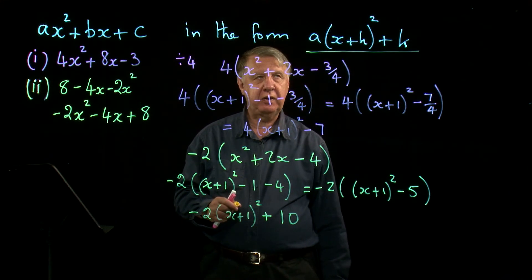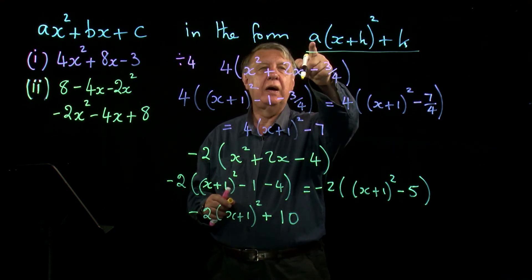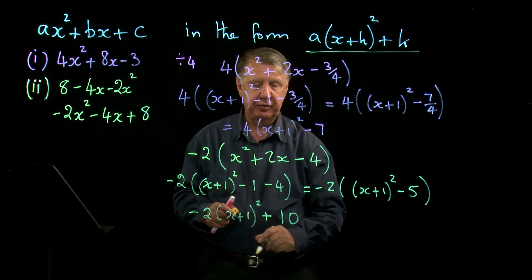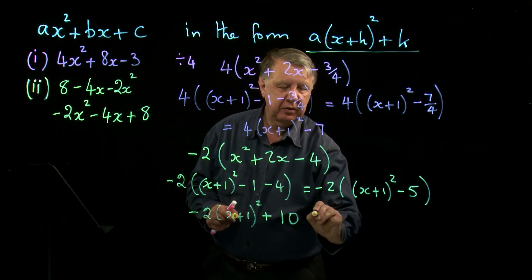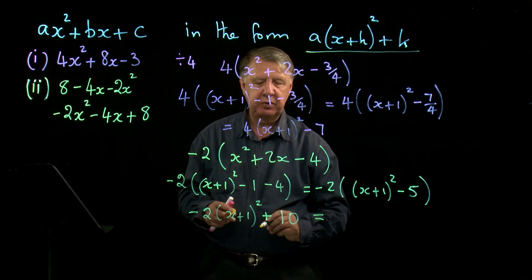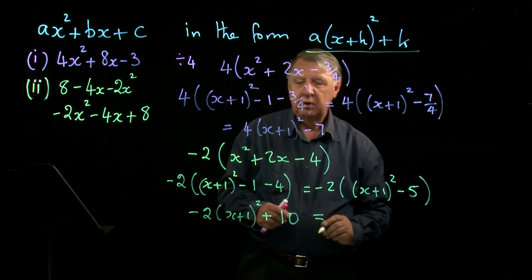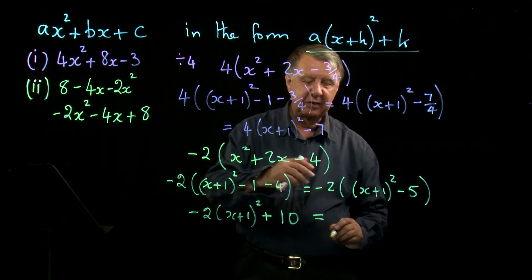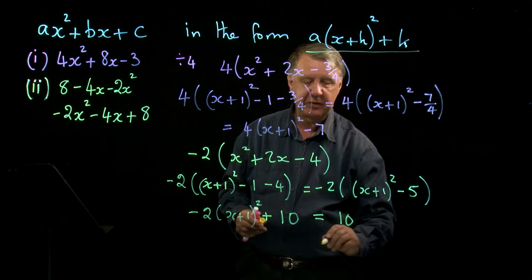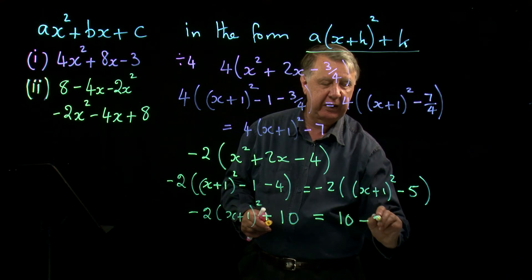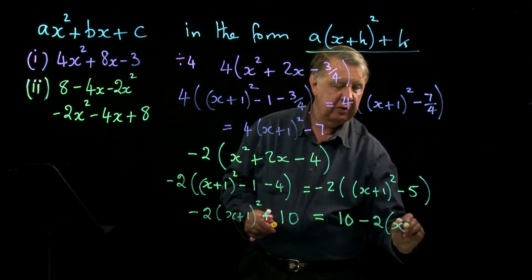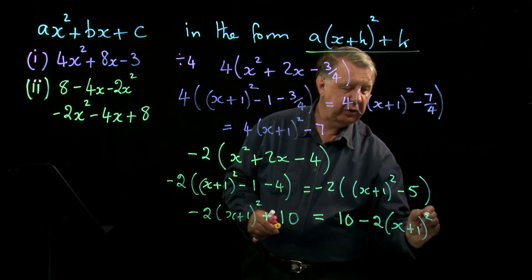This time a is negative. In fact, if we wanted it to look a bit nicer, we would actually write this one the other way around, so we'd write this as 10 take away twice x plus one squared.